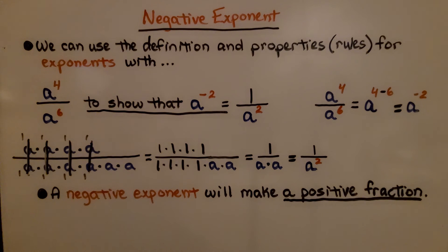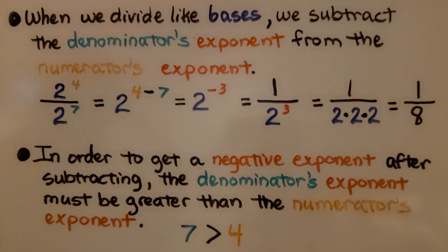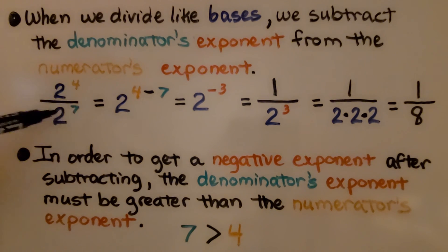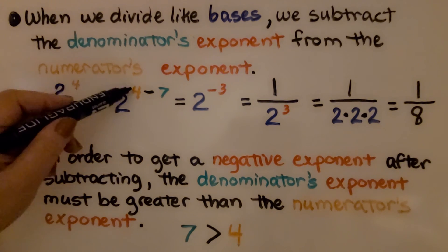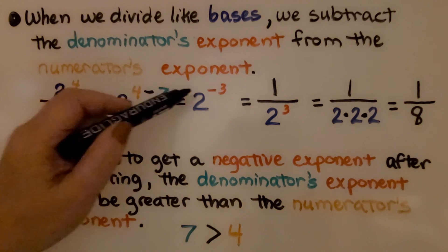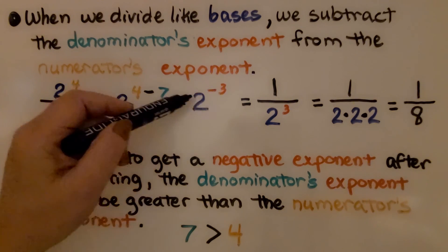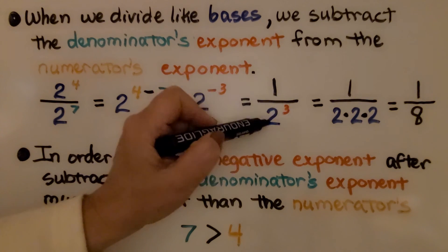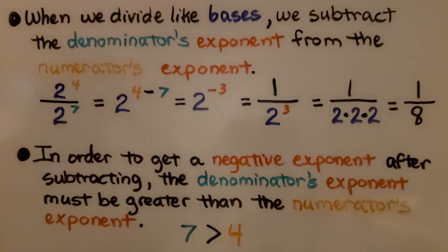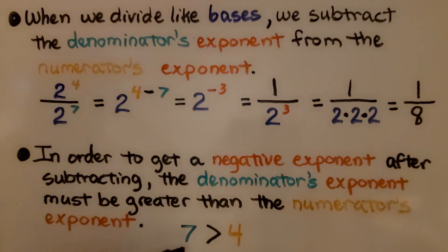When we divide like bases, we subtract the denominator's exponent from the numerator's exponent. We have like bases: 2 raised to the 4 minus 7 power. 4 minus 7 is negative 3, so we have 2 raised to the negative 3, which becomes a positive fraction: 1 over 2 to the positive 3, equal to 1 over 2 times 2 times 2, which is 1 eighth. In order to get a negative exponent, the denominator's exponent must be greater than the numerator's — 7 is greater than 4.